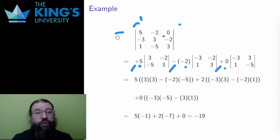Finally, each entry is multiplied by a smaller matrix. For 5, I delete both the row and the column that contain 5, and the resulting 2x2 matrix is 3, negative 2, negative 5, 3. I'm going to write that here.